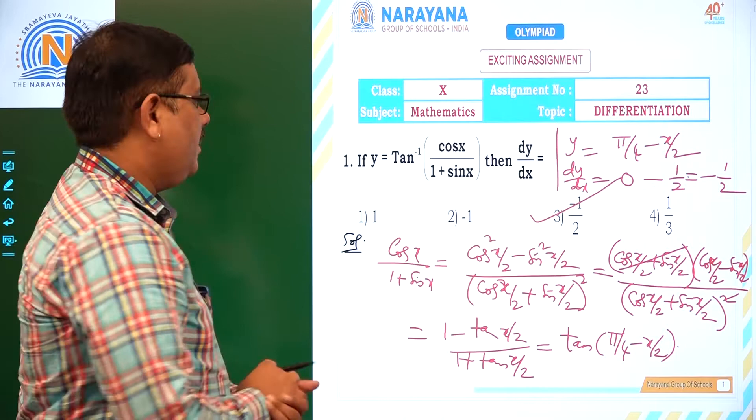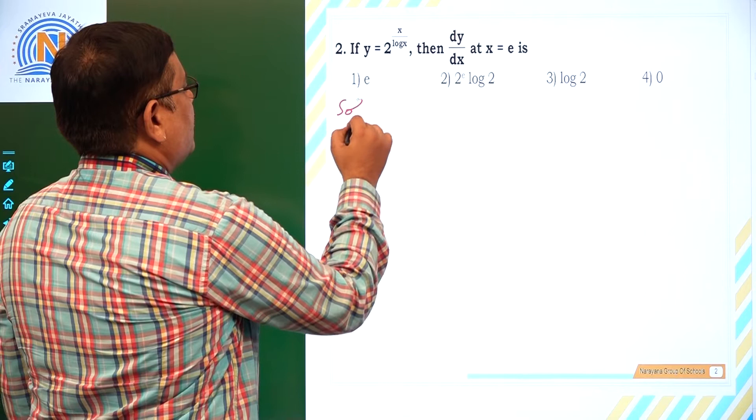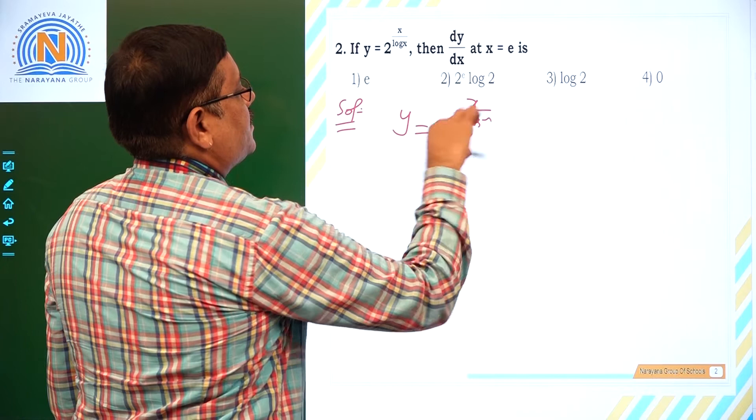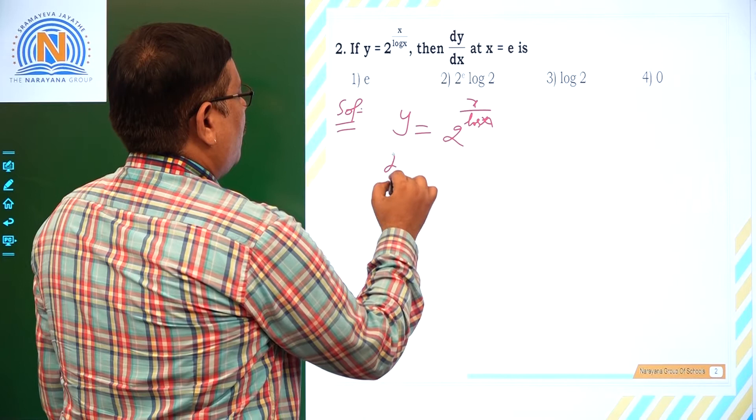Let us see the next question. If y is equal to 2 to the power of (x / log x), then dy/dx at x equal to e is what? Let us see. y is given as 2^(x / log x). This is a problem based on chain rule. Now dy/dx — we are differentiating both sides with respect to x.